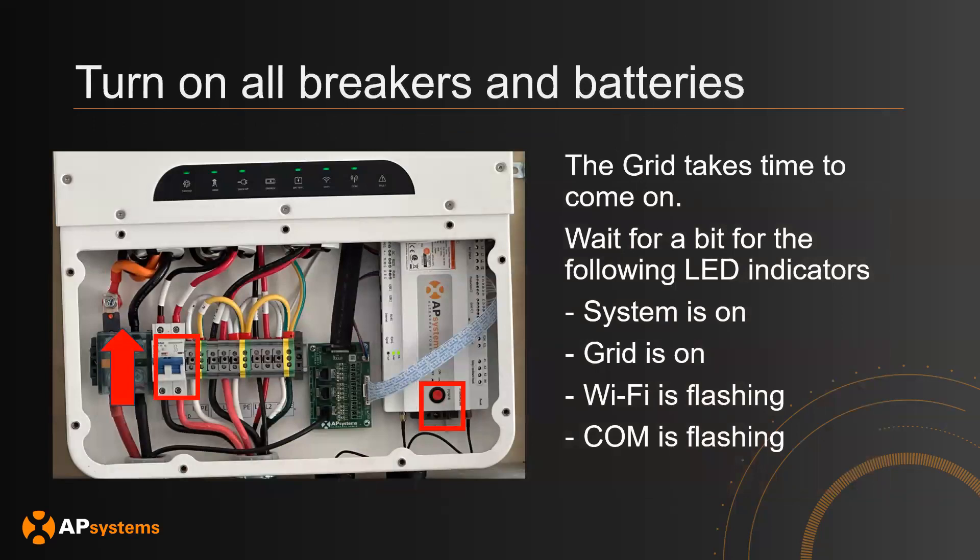Inside the PCS, make sure the grid breaker is in the on position (up), and that the ECU button is depressed into the on position. Once power is supplied to the entire system, the PCS will start to flash LED indicators. Wait until the LED indicators show: System solid green, Grid solid green, Wi-Fi flashing, and COM flashing. Once you see those states, that is a good sign. It takes a bit of time for the PCS to detect the grid voltage and energize — that's when you'll see Grid solid green.